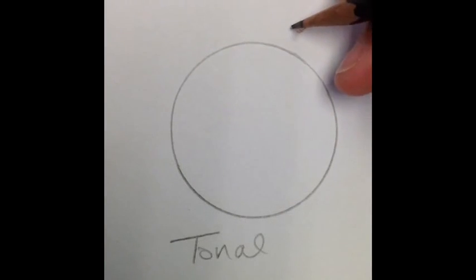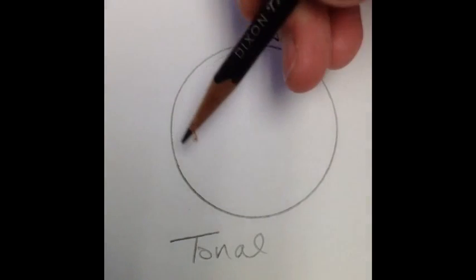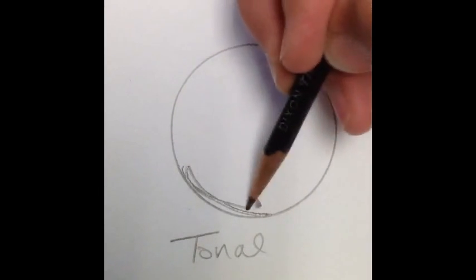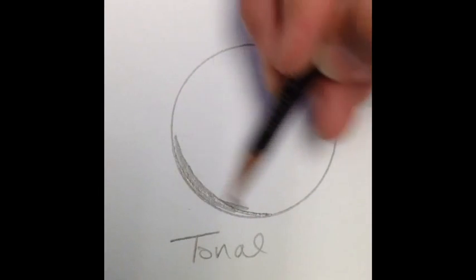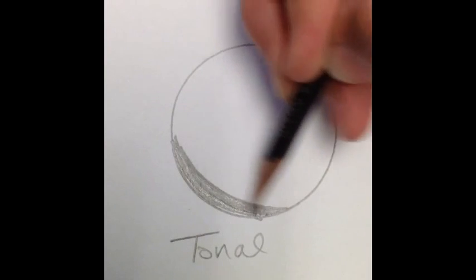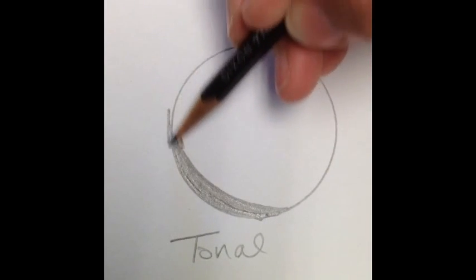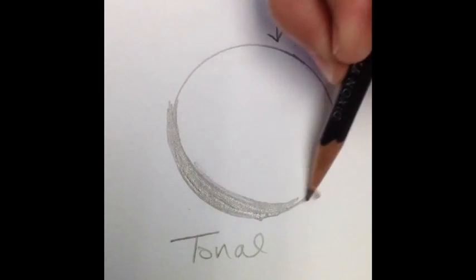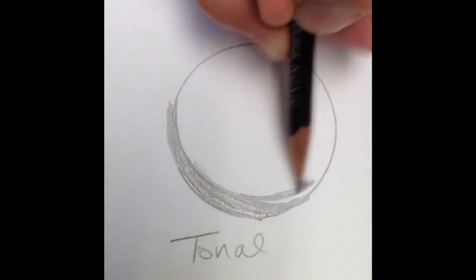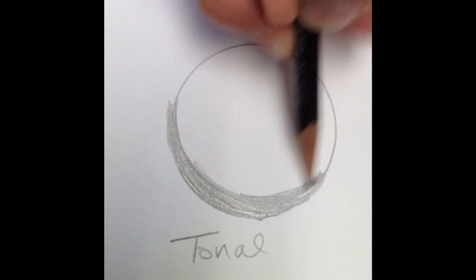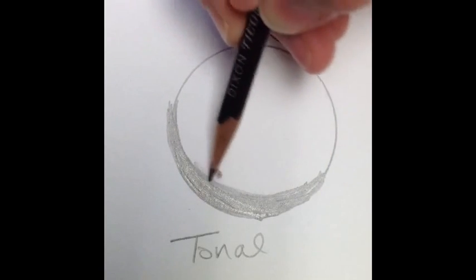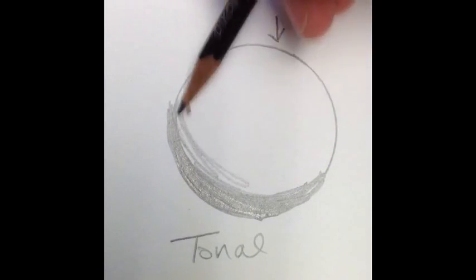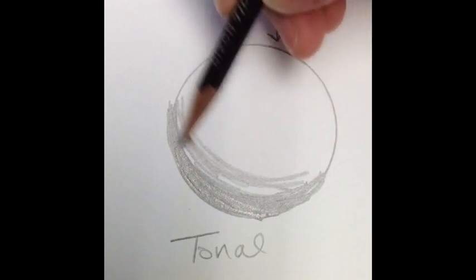The third step is called tonal. Pick a light source and start shading. You can start at the bottom pretty dark. This is all about pressure, the amount of pressure you use on your pencil to create the shadow. As you go, curve your pencil strokes. Notice the pencil is curving like the sphere would be curved, then use less pressure for the next section.